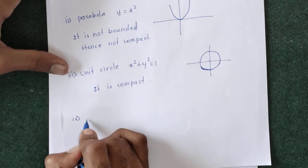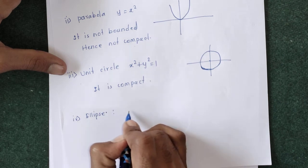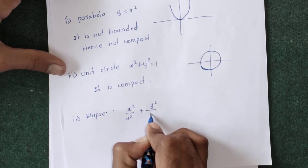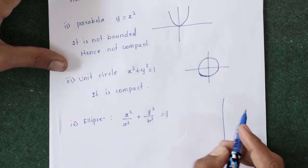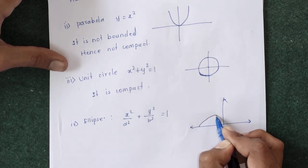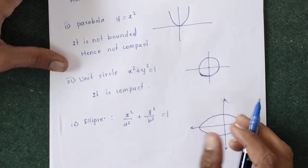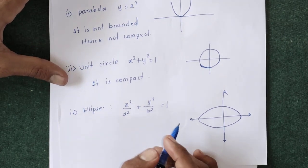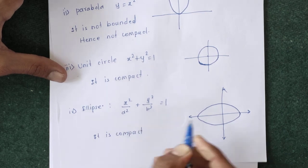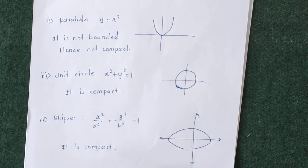The third one is the unit circle: x² + y² = 1. The unit circle is centered at the origin with radius 1. This circle is closed as well as bounded, so it is compact — closed and bounded implies compact by the Heine-Borel theorem. The last example is the ellipse: x²/a² + y²/b² = 1. Clearly the ellipse is also closed and bounded, hence by the Heine-Borel theorem it is compact.